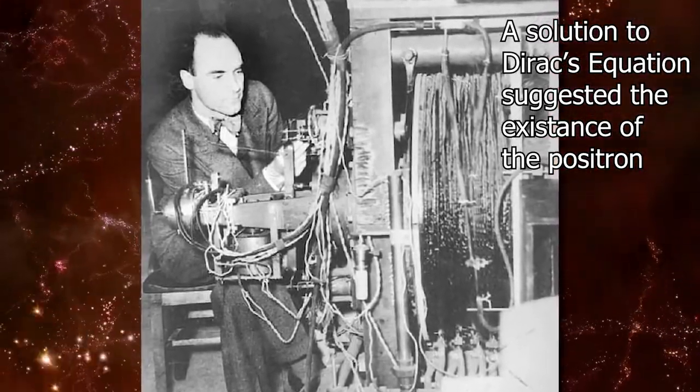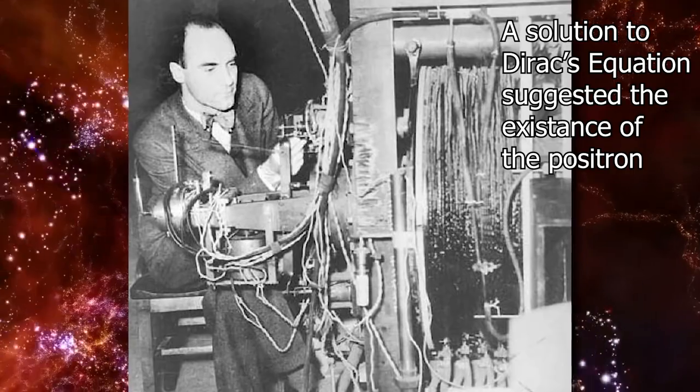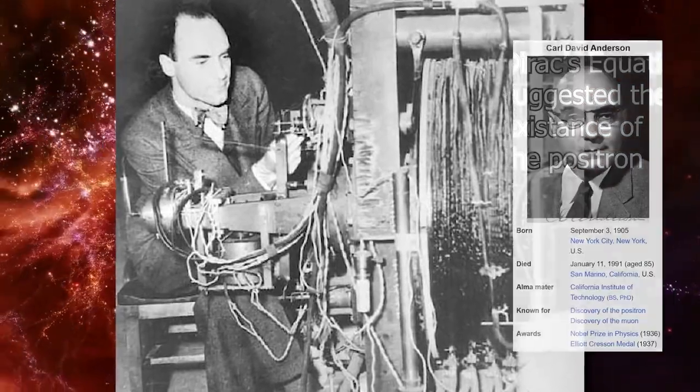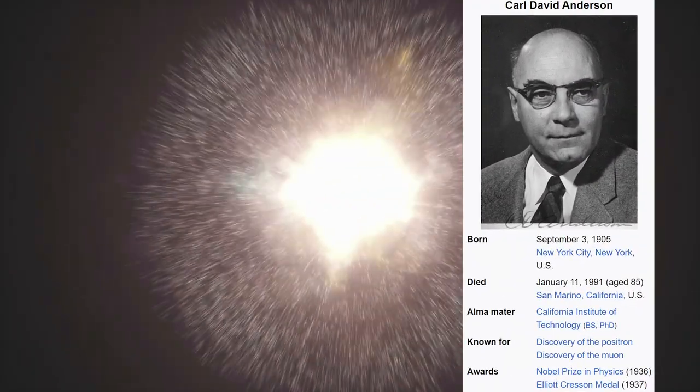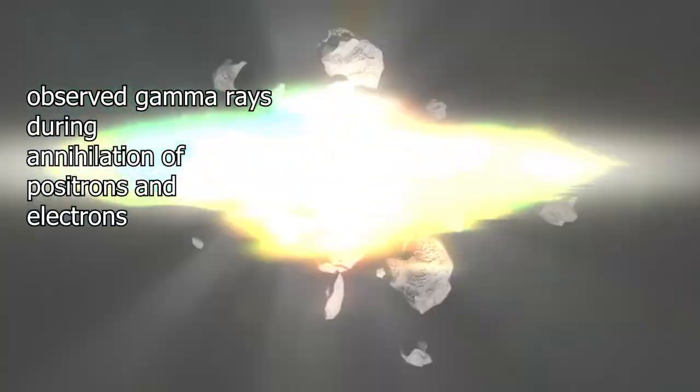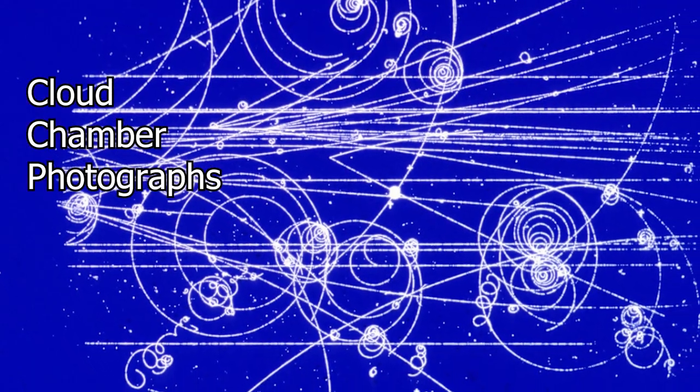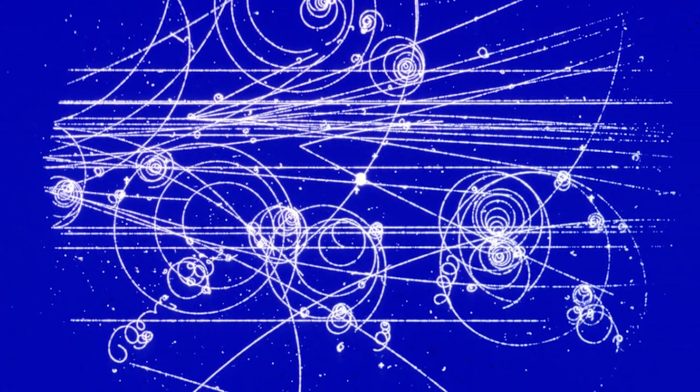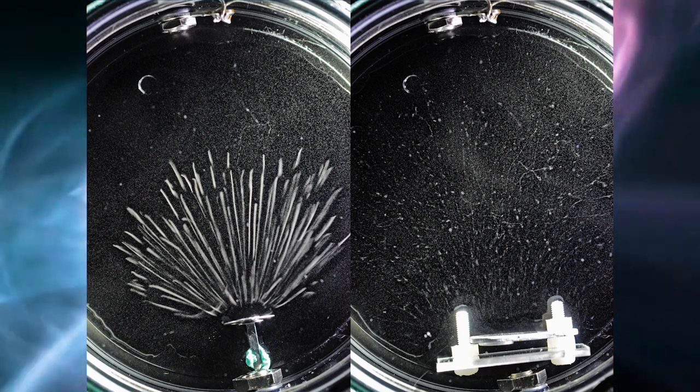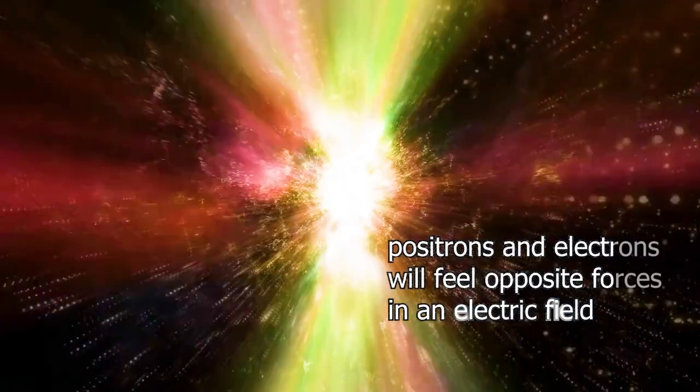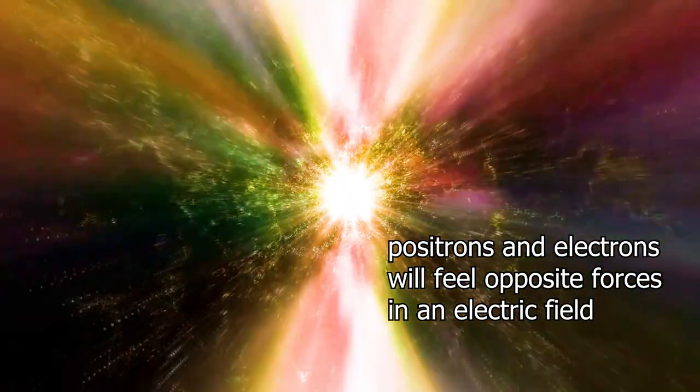The discovery of the positron, or the anti-electron, was confirmed experimentally by American physicist Carl Anderson in 1932, who observed the characteristic gamma rays produced during the annihilation of positrons and electrons. In cloud chamber photographs, he noticed the trajectory of particles with the mass of electrons, but with the opposite trajectory, as if they had the opposite charge but with the same mass. This was the first experimental evidence for the existence of antimatter, and it marked the beginning of the scientific study of this mysterious substance.